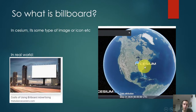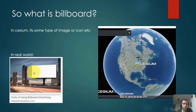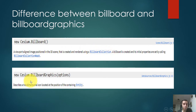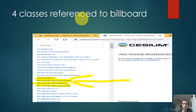What is a billboard in Cesium? It's a type of image or icon. As you see in the picture, we see the Cesium logo — it's just an image. Now, the difference between billboard and billboard graphics: billboard needs to be inside a billboard collection, while billboard graphics are inside an entity.